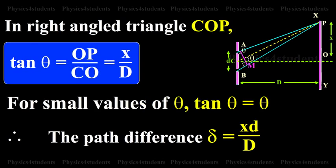In right-angled triangle COP, tan theta is equal to OP by CO is equal to x by D. For small values of theta, tan theta is equal to theta. Therefore, the path difference delta is equal to xd by D.